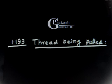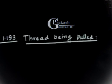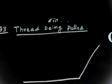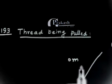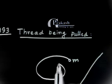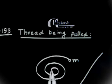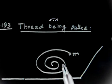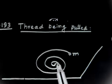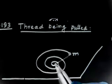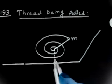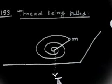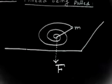Let us discuss problem 1.193. I have a horizontal table, and there is an object of mass m. The motion of the object is given. Initially this is attached by a thread — let me make the thread a solid line — and this thread has been pulled from the bottom with a constant force F, and F is constant.